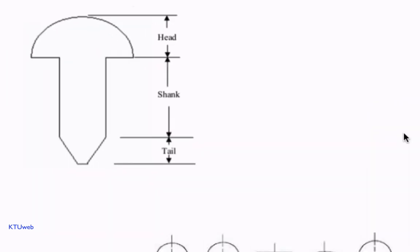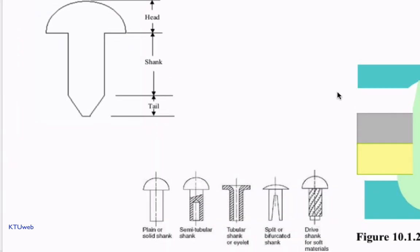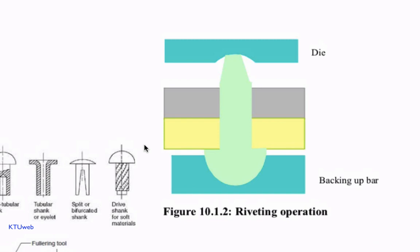A rivet is a short cylindrical rod having a head and tapered tail. The main body of the rivet is called the shank. Different rivet heads are used for various applications: snap heads are used mainly for structural work and machine riveting, whereas countersunk heads are employed for shipbuilding where flush surfaces are necessary. Conical heads are used where riveting is done by hand hammering. Pan heads are required where very high strength is needed, since they have the maximum strength, but they are very difficult to shape.